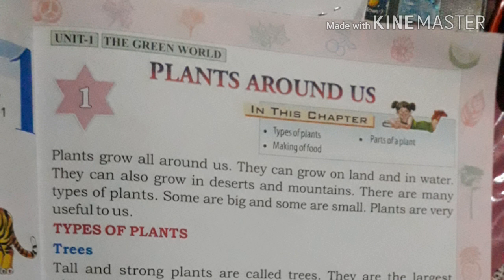There are many types of plants — some are big and some are small. Big or small, that doesn't matter; in every way plants are useful to us. Now we are going to study about the types of plants. The first one is trees. Tall and strong plants are called trees; they are the largest plants.